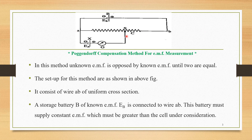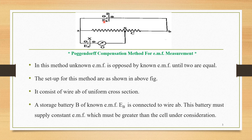This setup consists of different important parts. It consists of wire AB of uniform cross section. A storage battery B of known EMF EB is connected to wire AB. This battery must supply a constant EMF which must be greater than the cell under consideration. So this storage battery B supplies a constant EMF EB which is greater than the EMF of the cell which is under consideration.